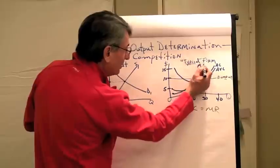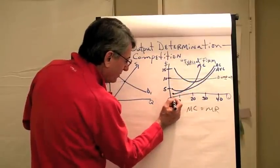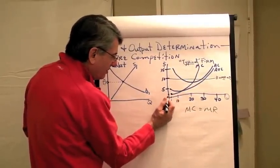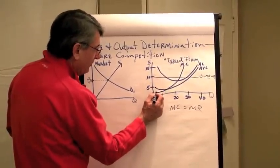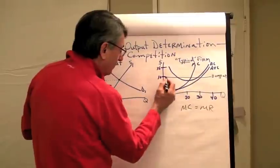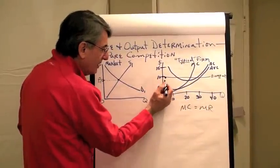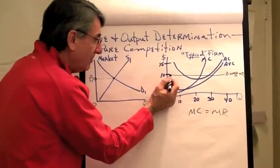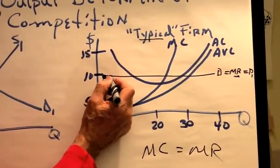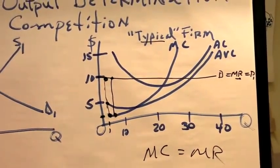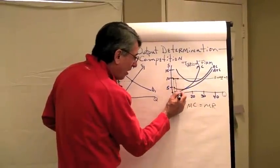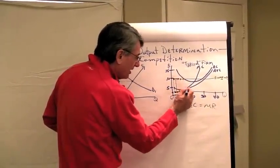This is marginal cost right here. If they produce the first unit, this point on the marginal cost curve says the marginal cost of this first unit is something like $2. But the marginal benefit — that's the marginal revenue — this firm's going to get $10 if they produce and sell it. That means it will add $8 to their profit. The next unit — that's the marginal cost, that's the marginal benefit — if they produce it, they'll add that much to their profit.